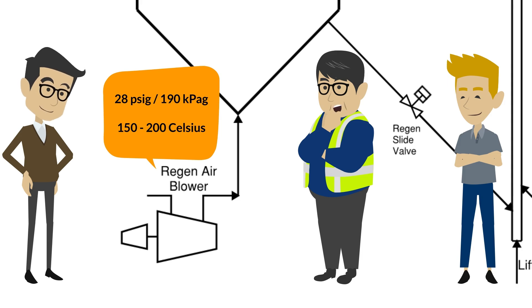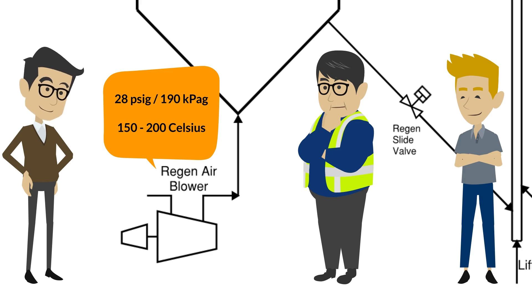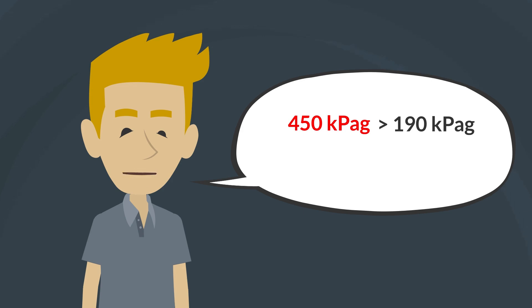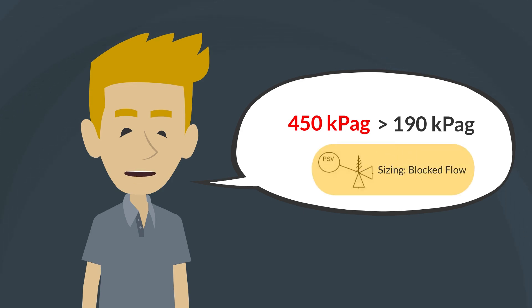Temperature can vary as it draws air in from the atmosphere at ambient temperature, but after the heat input from the blower, the temperature is between 150 and 200 degrees Celsius. The maximum pressure the blower can generate is around 450 kPaG, which is higher than the design pressure of the regenerator, so there is a PSV sized for blocked flow of the discharge, relieving to atmosphere.